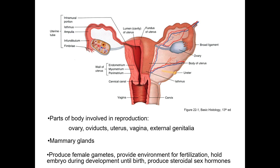These organs function together to facilitate fertilization, provide an environment for fertilization, and hold the embryo until birth. We'll start with the uterine tubes, but first, let's quickly review ovulation.